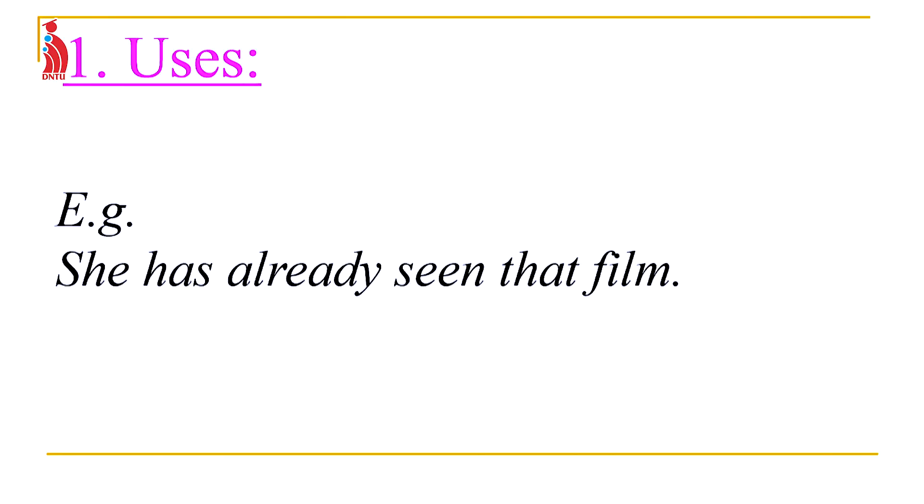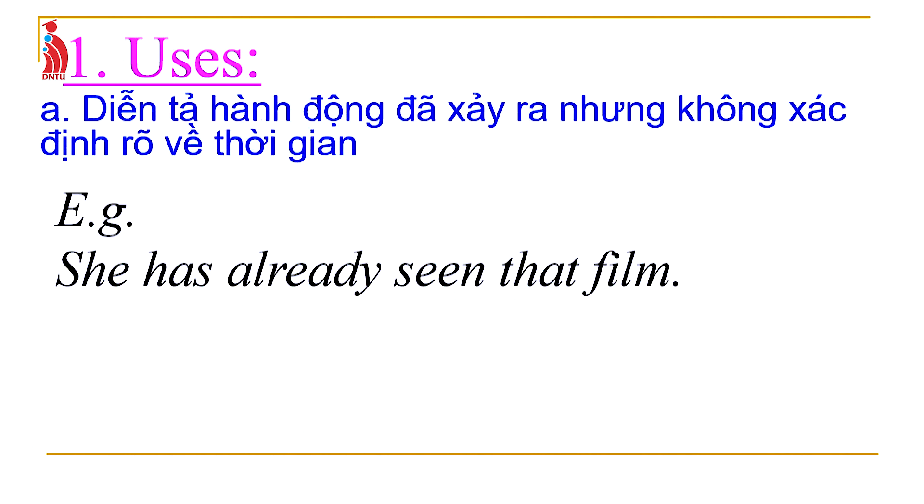Look at these sentences. 'She has already seen that film.' She has seen that film — the action has happened, but we don't see a specific time. So the present perfect is used to describe an action that has happened but with no specific time mentioned.